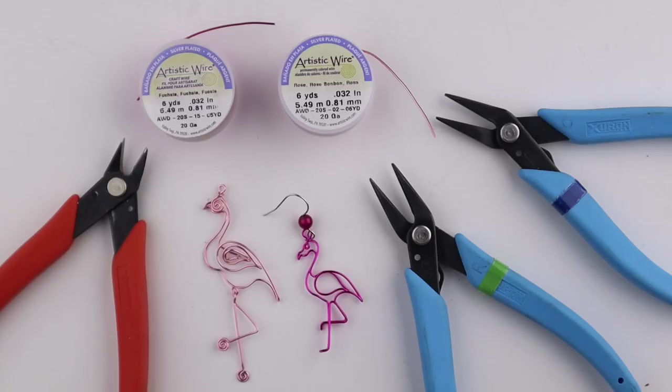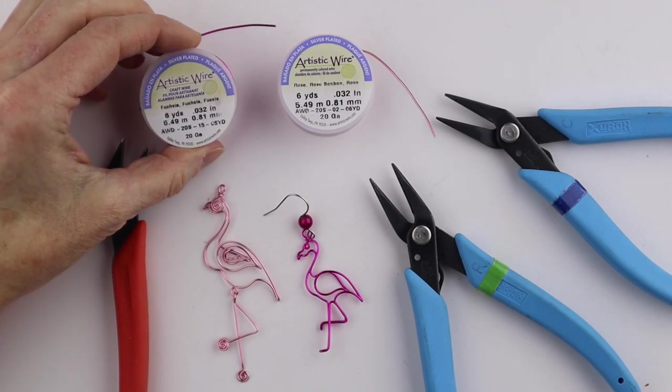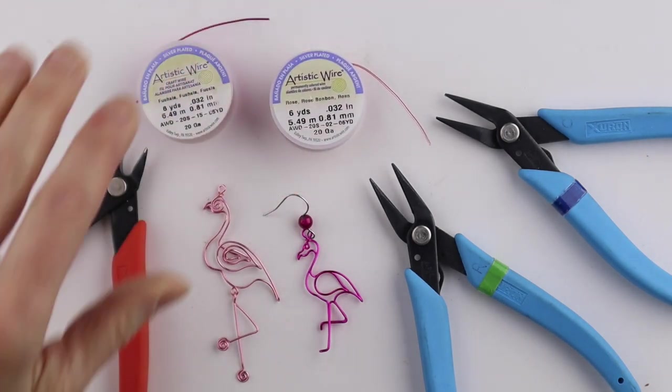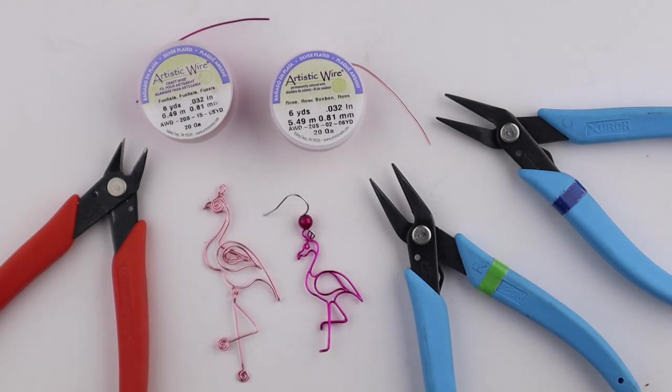What you're going to need for this project is your wire. I have 20 gauge artistic wire in fuchsia and in rose. You're going to need your tools and earring hooks.